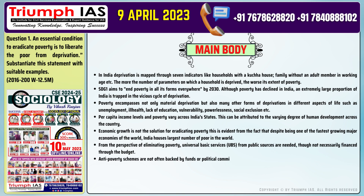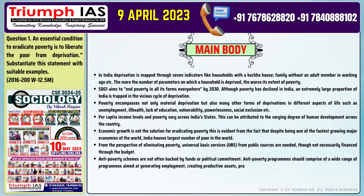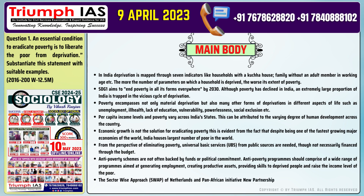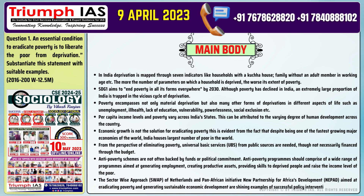Number seven: Anti-poverty schemes are not often backed by funds or political commitment. Anti-poverty programs should comprise a wide range of programs aimed at generating employment, creating productive assets, providing skills to deprived people, and raising the income level of the poor. Number eight: The sector-wide approach (SWAP) of Netherlands and the Pan-African Initiative New Partnership for Africa's Development (NEPAD) are shining examples of successful policy interventions for eradicating poverty and generating sustainable economic development.